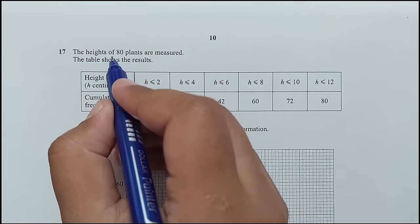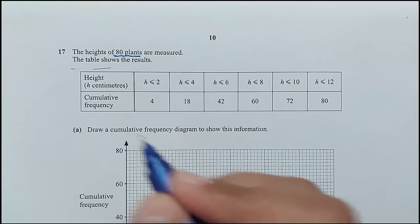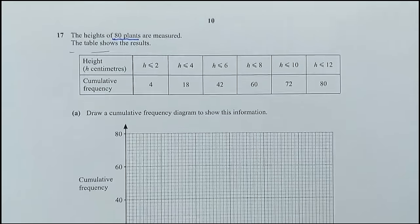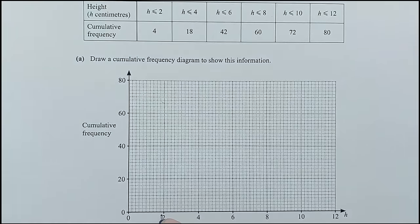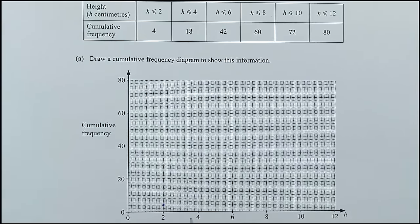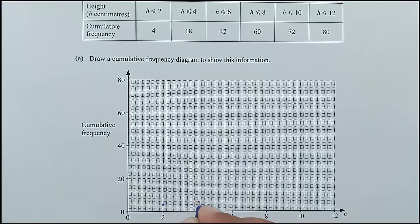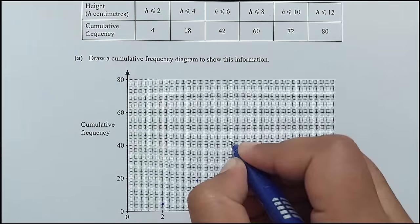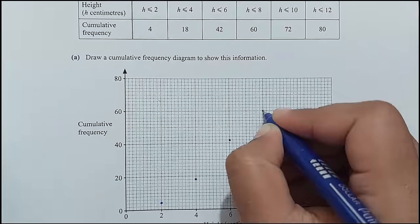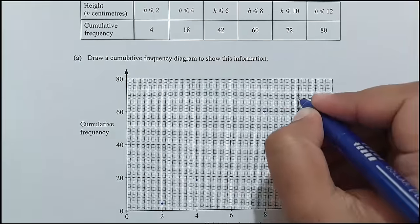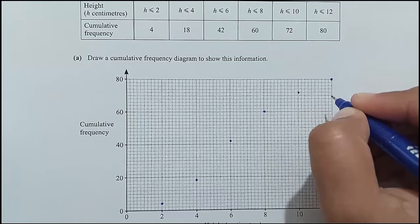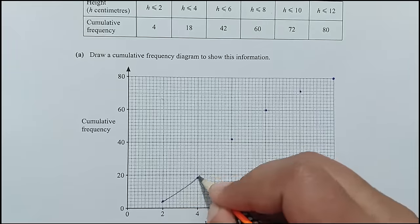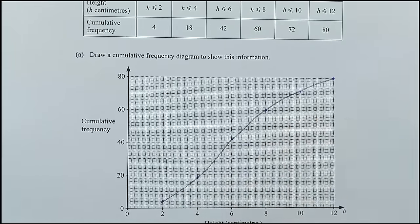Question number 17: the heights of 80 plants are measured, with a cumulative frequency table given. For part A, draw a cumulative frequency diagram. Plotting the points: height 2 gives CF 4, height 4 gives CF 18, height 6 gives CF 42, height 8 gives CF 60, height 10 gives CF 72, height 12 gives CF 80. Connecting all the points gives the cumulative frequency curve.